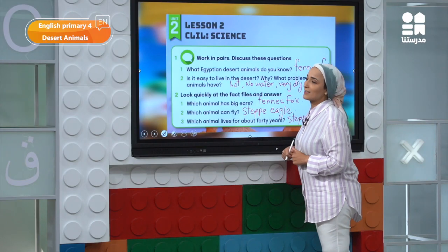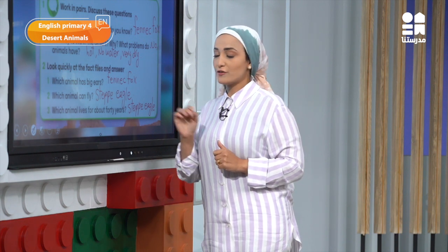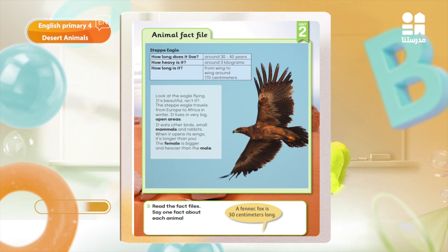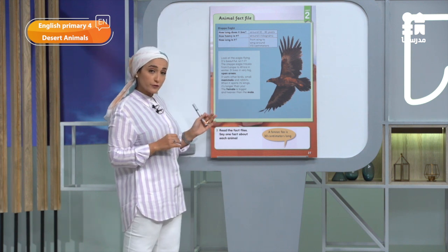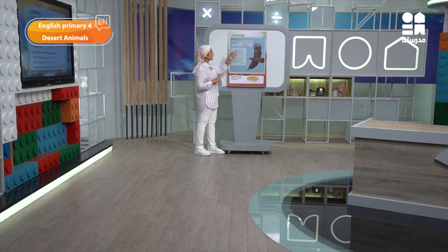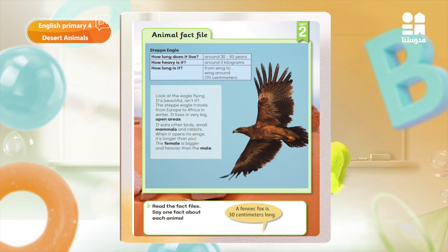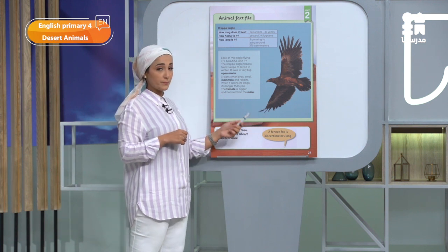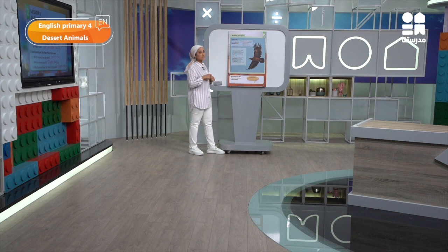You are doing a very great job. Now, I want you to open page 27 and check the first question. Here is page 27 — read very carefully the fact file about the steppe eagle: how long does it live, how heavy it is, how long is it. Also, we have some facts about the fennec fox. In the previous page we talked about the fennec fox, and now we are talking about the steppe eagle.